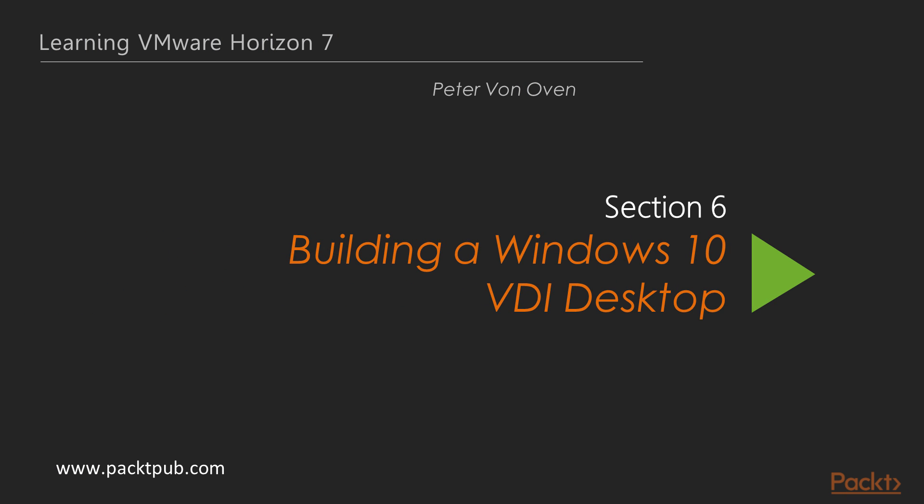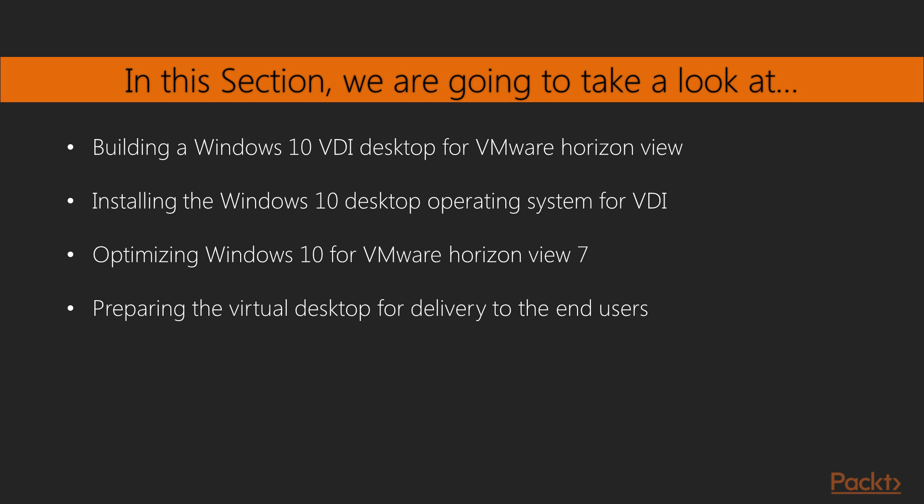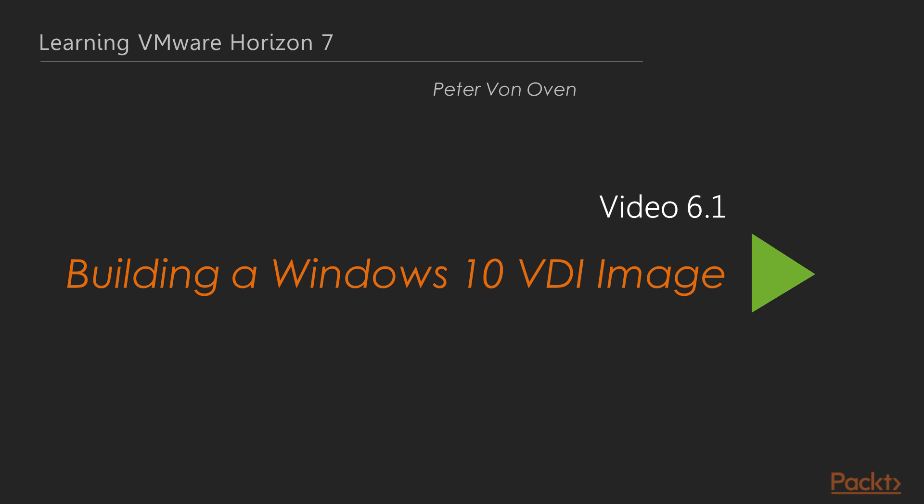Hello, and welcome to the second section of Volume 2, Building and Optimising the Desktop Operating System. In this section, we are going to build a Windows 10 Virtual Desktop machine. In this first video, we are going to start by creating a Windows 10 Virtual Desktop in vCenter, install and optimise the Windows 10 operating system, and prepare the Virtual Desktop machine for delivery to end users. Let's get started.